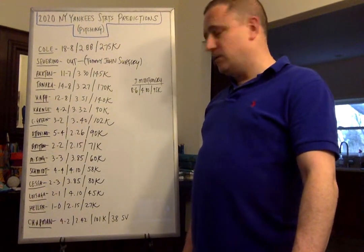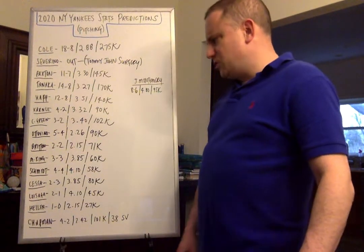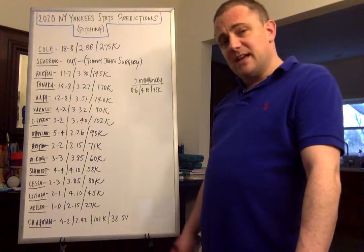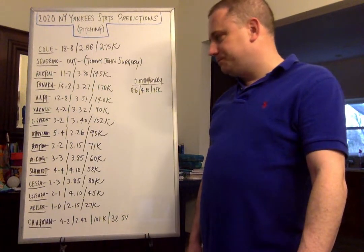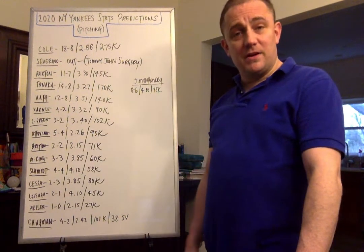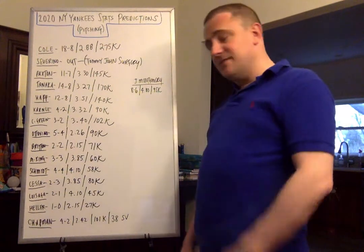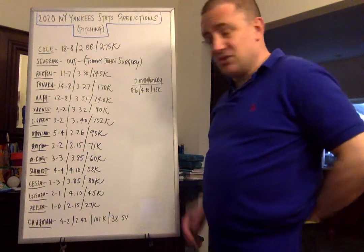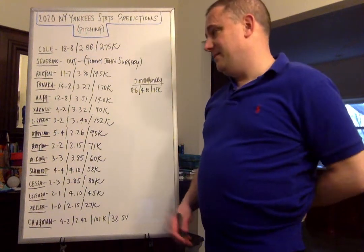Zach Britton, one of our stud relievers, getting about a 2-2 record with a 2.15 ERA and about 71 strikeouts. I could see him getting a couple saves as well, as well as Ottavino. Adam Ottavino was the next guy. I could see him getting a couple saves as well. He actually had a crazy good year too. He had a little bit of a funk for about a month, but he still had a sub-2 ERA.